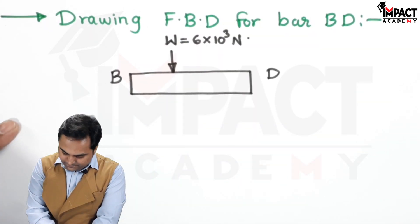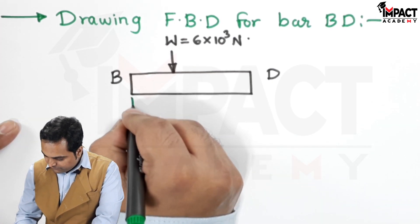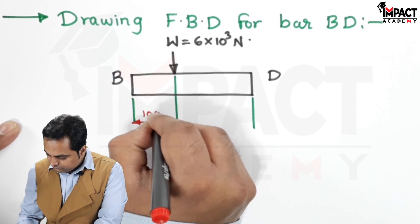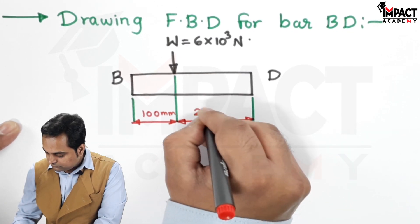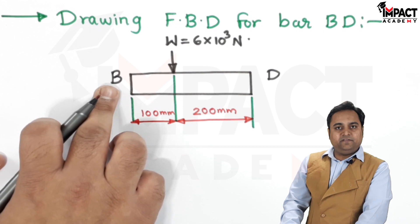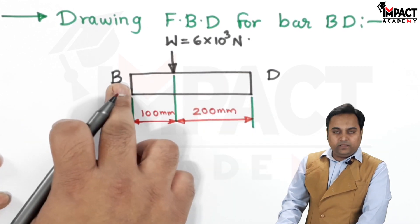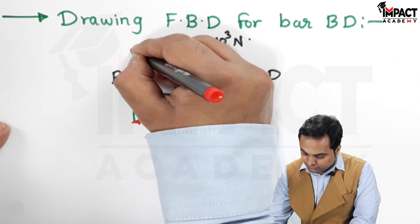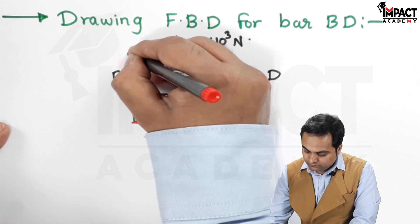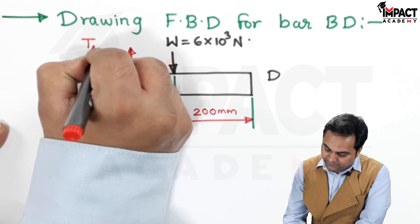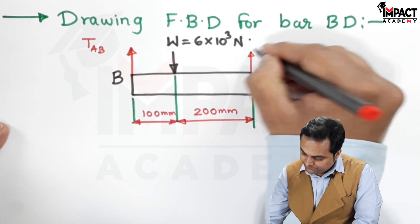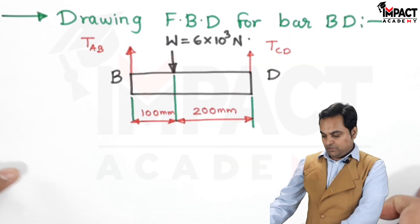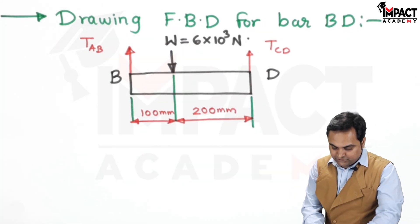The distance of the load is given from B and D. And now, the string or the wire is attached at B and D. At B, the string which is attached that is the wire AB. So it is offering tension in the opposite direction to the load. This would be tension in wire AB. Similarly, for CD, they are opposing the load. So acting in the upward direction. Now, by looking into this FBD, I can use the condition of equilibrium.